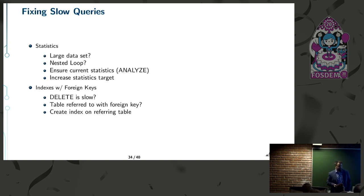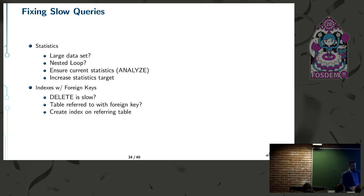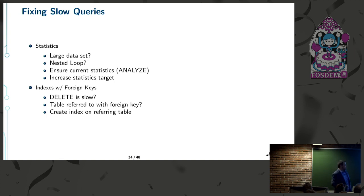An area where your statistics might be off: if you have a large data set and you're getting a nested loop, this can happen when you haven't run ANALYZE on a table — by default Postgres assumes an unanalyzed table is pretty small. You can help by increasing your statistics target and making sure stats are current.